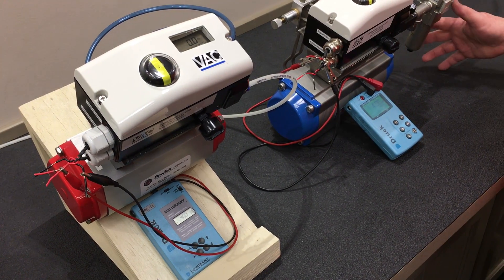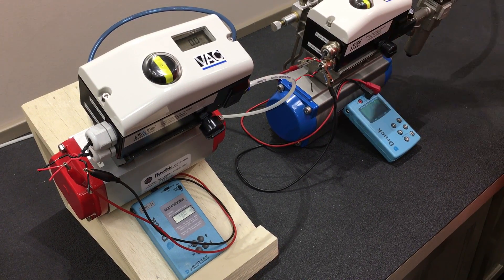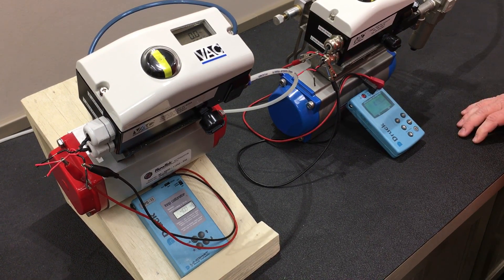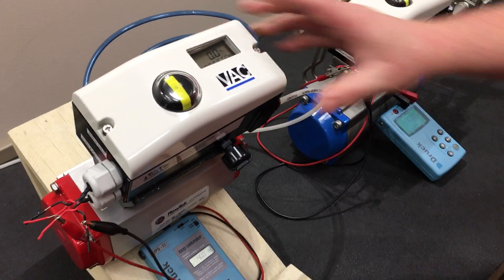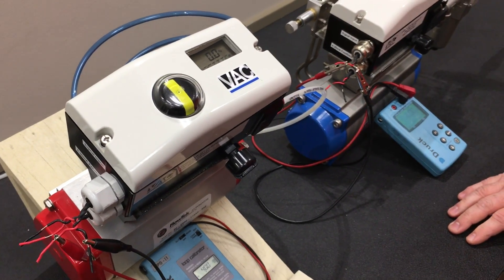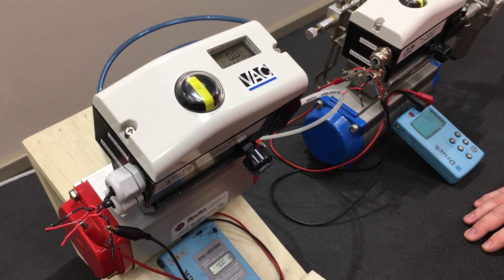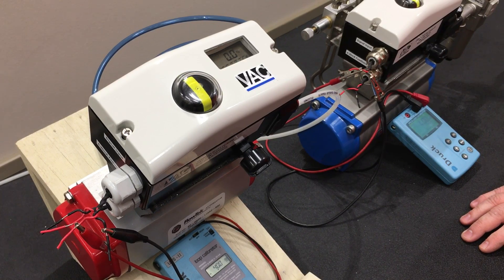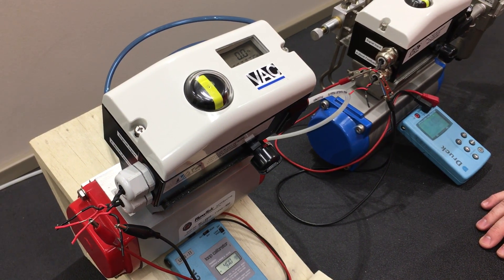This is a demonstration of a positioner with a fail freeze function as well as a pneumatic lockup valve. First, we're going to look at a standard positioner, which is a fail-safe positioner. Whenever it has a signal and the signal is lost, it goes to a zero position, no matter what the error signal was.